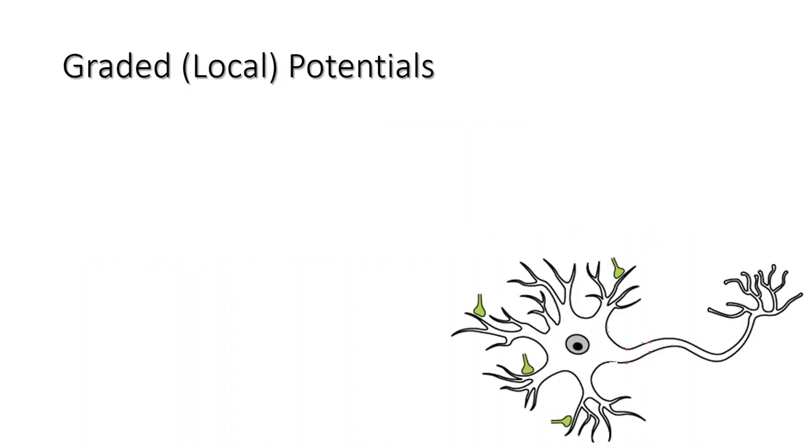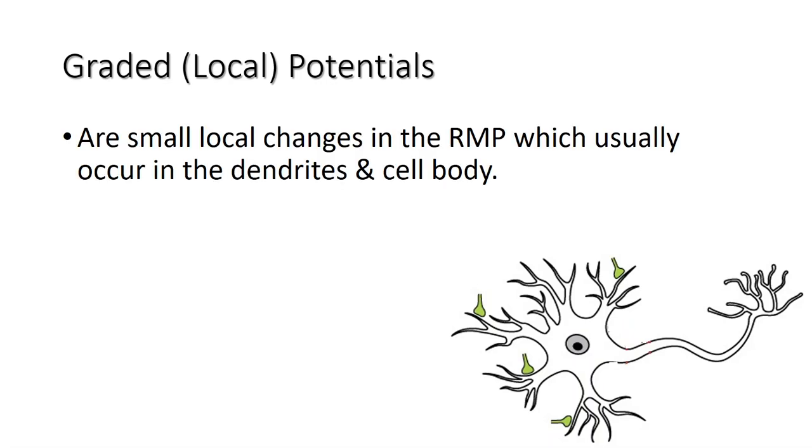Graded potentials are defined as the small local changes in the resting membrane potential which usually occur in the dendrites and the cell body. Graded potentials serve as electrical signals over a short distance.